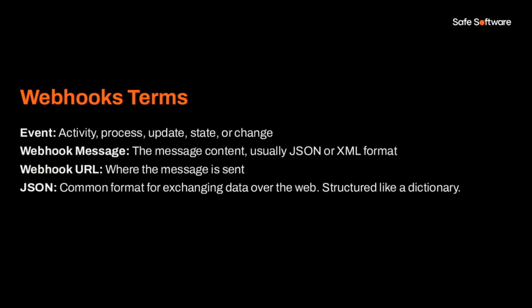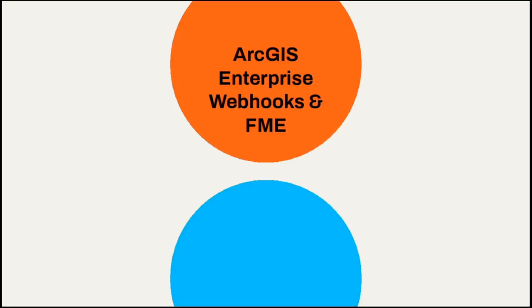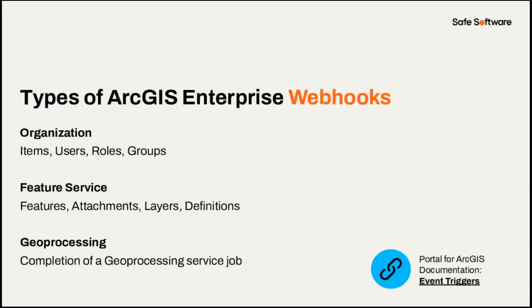When an event takes place on one application, a message is pushed out about that event, and FME receives that message and responds with the workflow. A few key terms: an event is anything that represents change on that application — activity updates, state changes. The webhook message usually contains information about that event. The URL is the destination for that webhook. You should be familiar with JSON, a very common data exchange format for the web. ArcGIS Enterprise offers three distinct categories of webhooks: organization webhooks for monitoring user and item activity, feature service webhooks for monitoring changes to hosted datasets, and geoprocessing webhooks that notify upon completion of a process in ArcGIS Server.